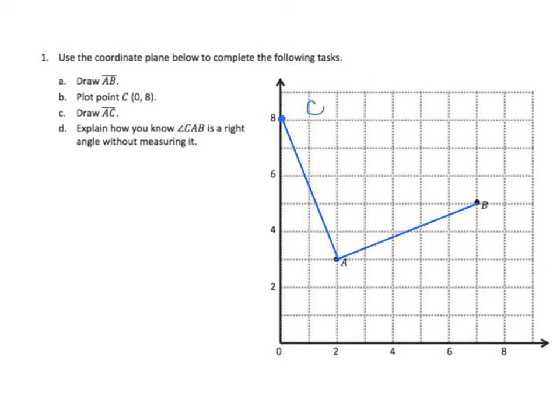Now that we have C drawn in, we need to explain how we know that angle CAB is a right angle. Well, we can use the triangles that we've worked with in the past. So if we look at our original line segment AB, we can visualize the right triangle below it, where we have five units going horizontally and two vertically. And what we can do here now is talk about the other triangle, where we have two units horizontally and five units vertically.